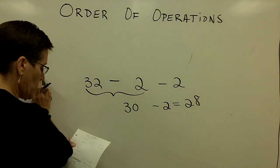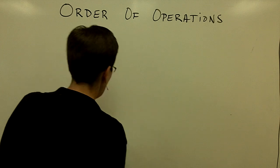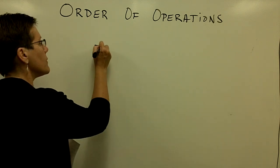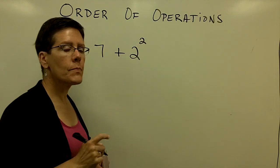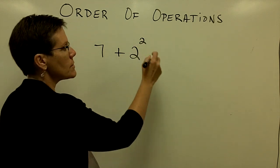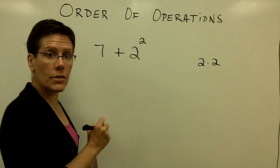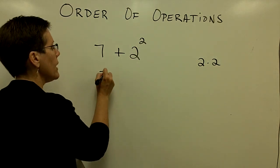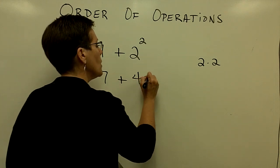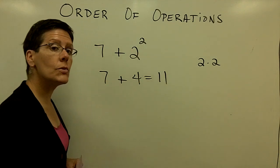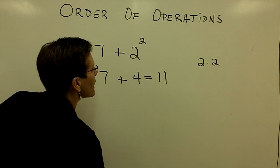Our next problem has some exponents in it. Let's take 7 and add 2 squared. 2 to the second power means 2 times 2, which is equal to 4. So I have 7 plus 4, which equals 11. I had to do those exponents first before I added.